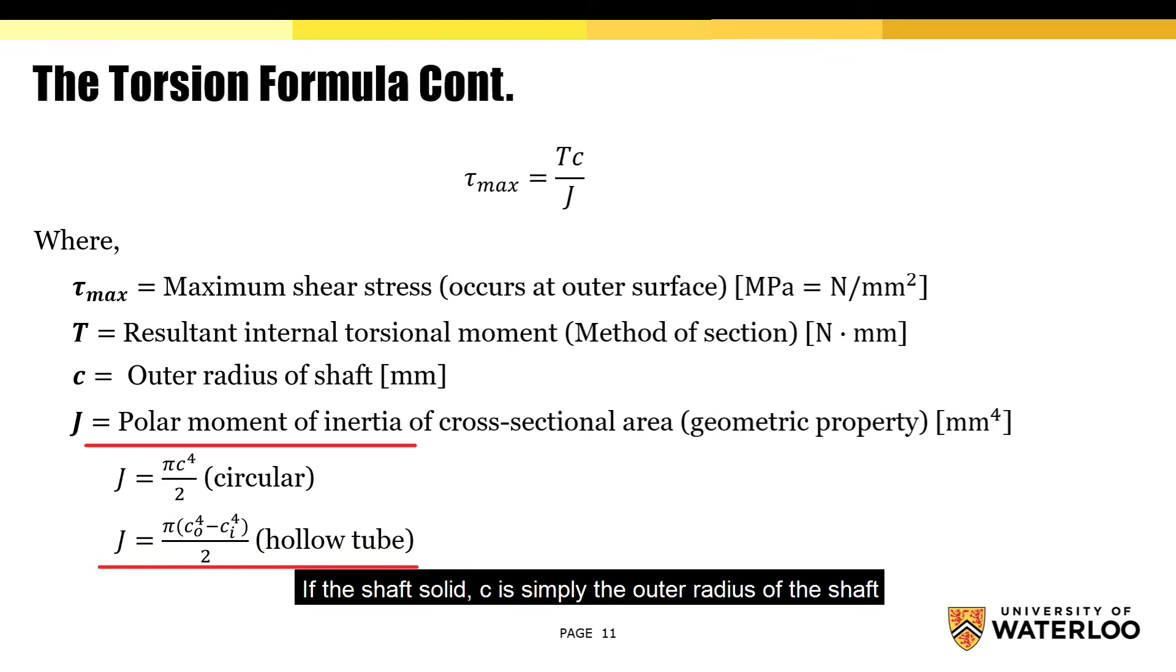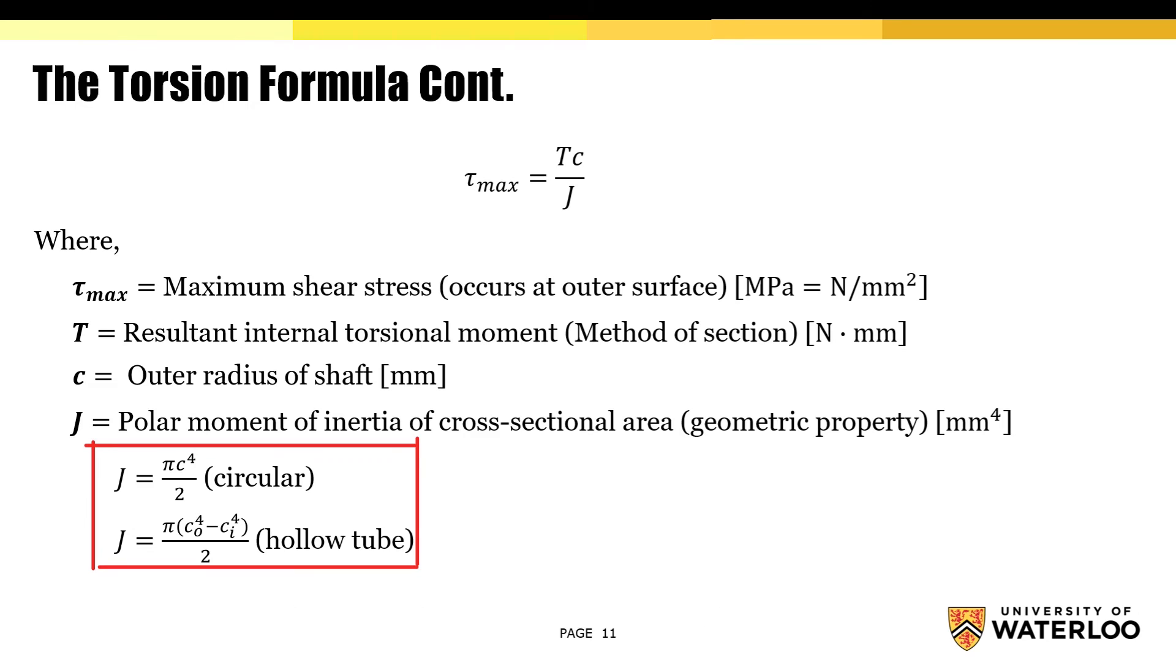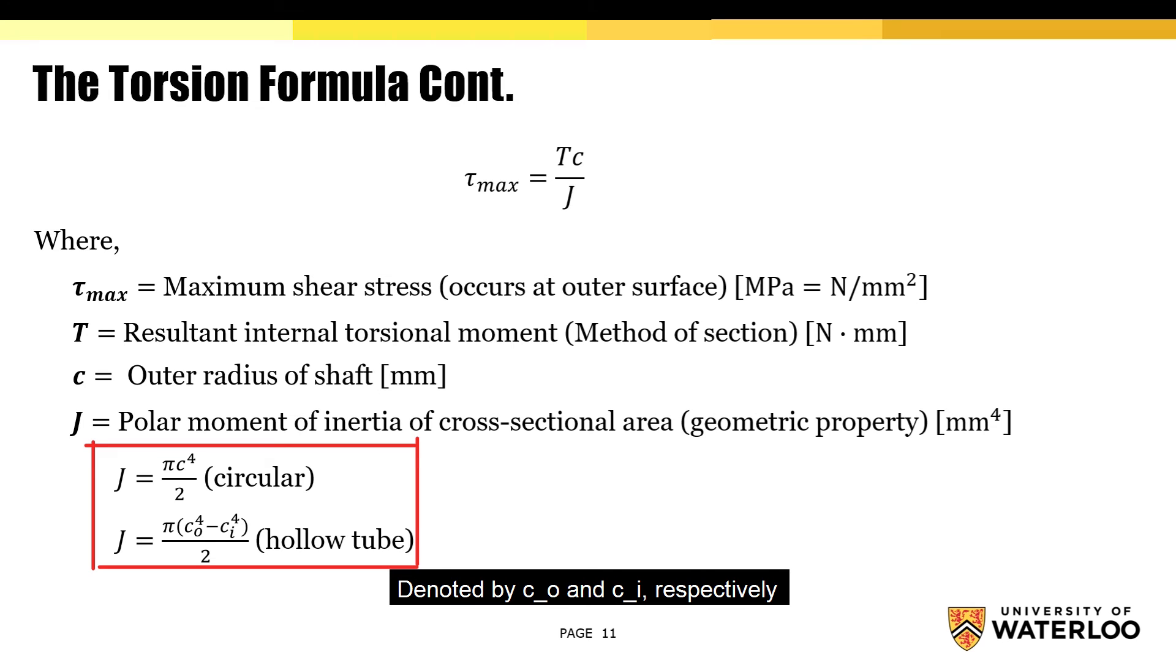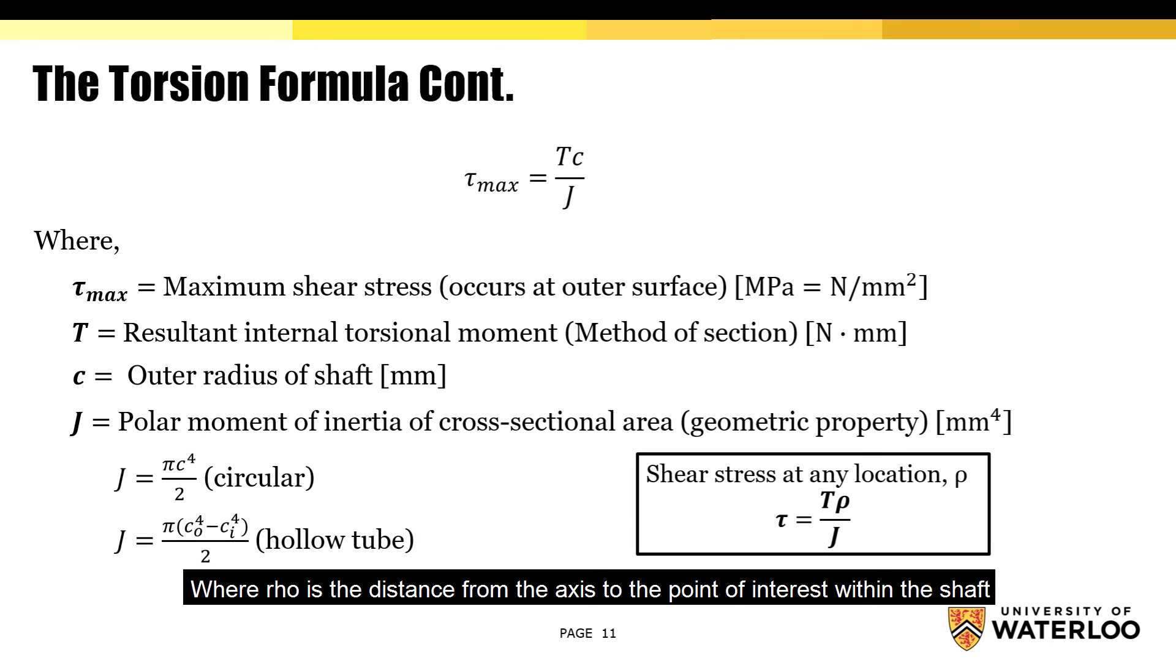If the shaft is solid, C is simply the outer radius of the shaft. However, if it's hollow, then you have to use both the outer and inner radius, denoted by CO and CI respectively. Also note, if you're interested in the maximum shear stress within the shaft, then the following formula can be used instead, where rho is the distance from the axis to the point of interest within the shaft.